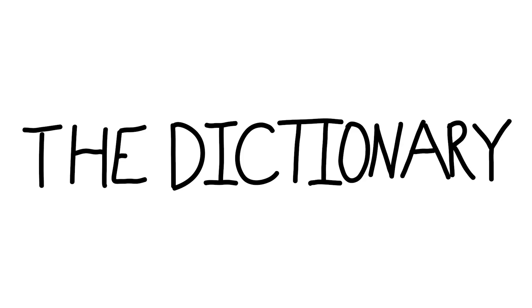Hello, word nerds. Welcome to another episode of The Dictionary. First for this episode is the suffix -ance, A-N-C-E. This is a noun suffix. One: action or process, as in furtherance; also instance of an action or process, as in performance. Two: quality or state; instance of a quality or state, as in protuberance. Three: amount or degree, as in conductance. Next we have ancestor, a noun from the 13th century.